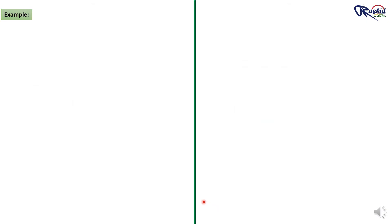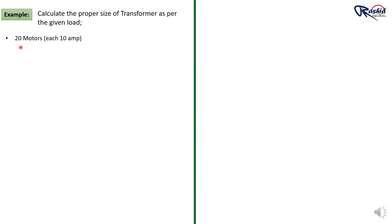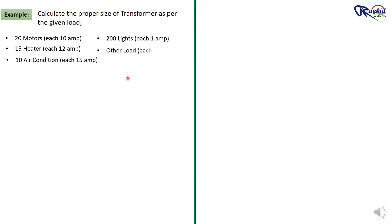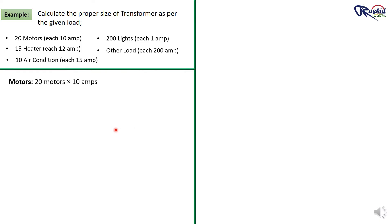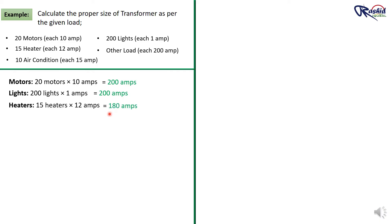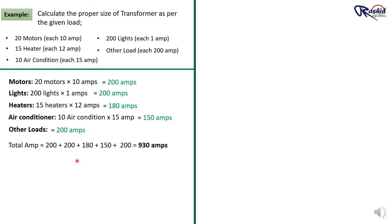Let's see one example for selection of a suitable transformer size. We have: 20 motors each rated 10 Ampere, 15 heaters each at 12 Ampere, 10 air conditioners each at 15 Ampere, 200 lights each at 1 Ampere, and other loads totaling 200 Ampere. Calculating totals: motors = 20 × 10 = 200A, lights = 200 × 1 = 200A, heaters = 15 × 12 = 180A, ACs = 10 × 15 = 150A, other = 200A. Total Ampere = 930 Ampere.